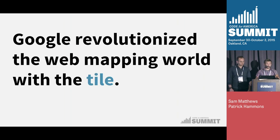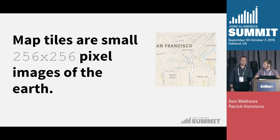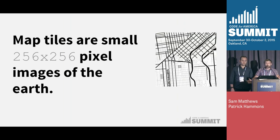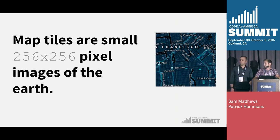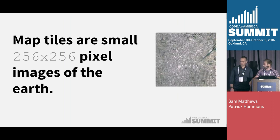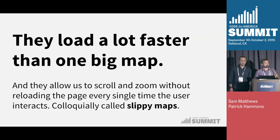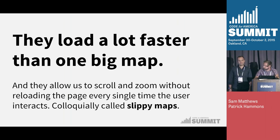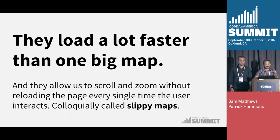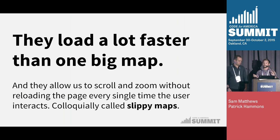After that, Google came out with a pretty revolutionary concept called the map tile. Map tiles are literally just little images — 256 by 256 pixel images of the Earth. They load a lot faster than one big map. As you click around, tiles only load within the space you are visualizing, and they allow you to click and drag a map across the page. Colloquially, we call these slippy maps.